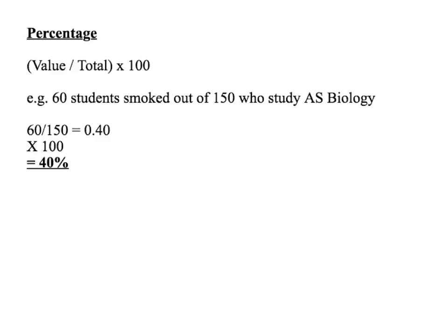Percentage: percentage is the value divided by the total times by 100. So let's say 60 students smoked out of 150 who study AS Biology. The value is 60 divided by the total number of students, which is 150 — gives 0.4, times by 100. So 40% of the students smoked.